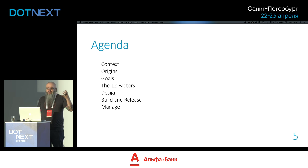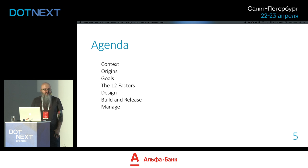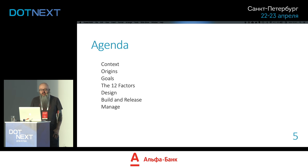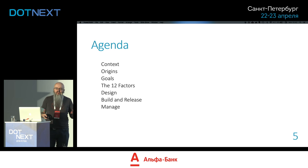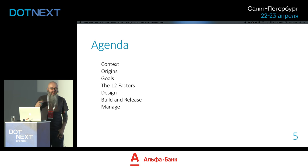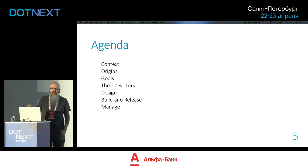What are we going to talk about today? First, I want to give you some context for 12-factor apps so you can understand why they might be important to you. Then I'll talk about the origins — who invented them and where they come from — and then we'll get into the 12 factors themselves. I cluster them into three groups: design factors, build and release factors, and manage factors.